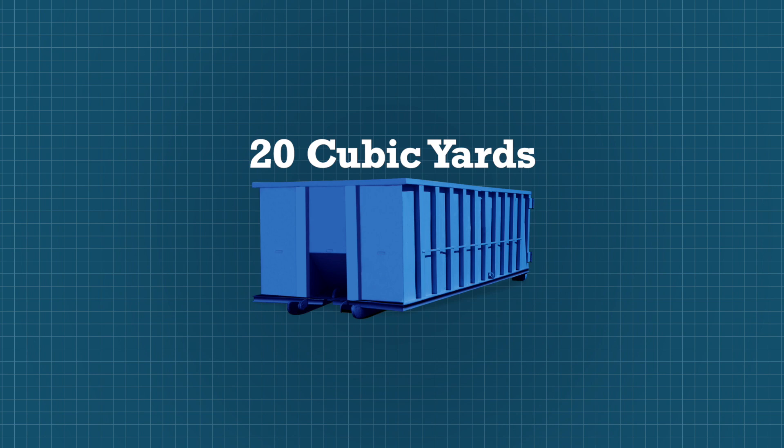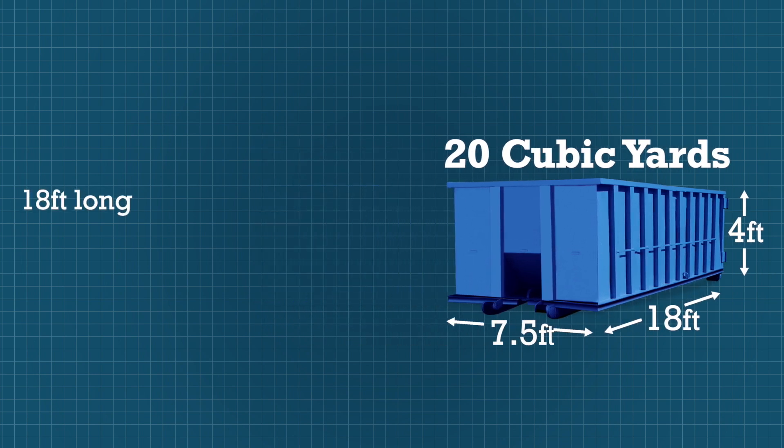Take a look at this 20 cubic yard dumpster that is 18 feet long by 7.5 feet wide by 4 feet tall. When you multiply length times width times height and divide by 27, you get 20 cubic yards.